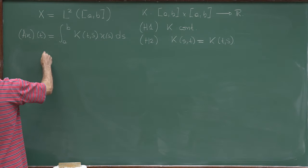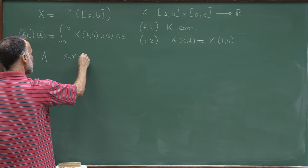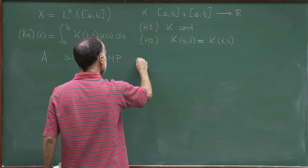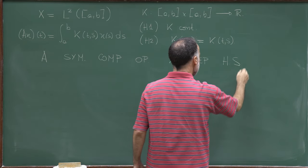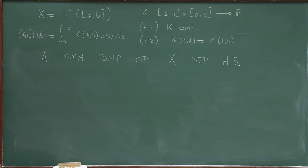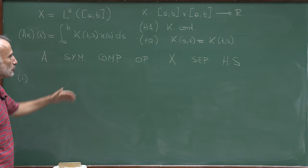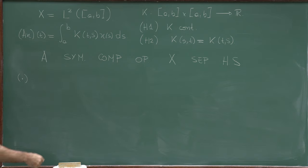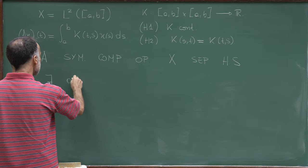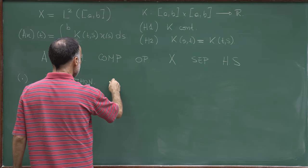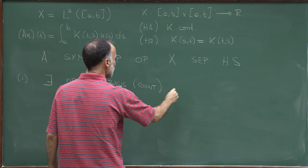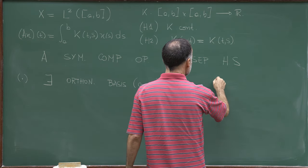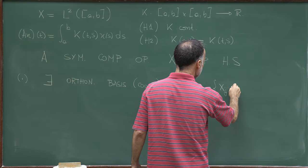We have proved that A is a symmetric compact operator on X, which is a separable Hilbert space. We are exactly in the framework of the previous lectures. Let me remind you what we proved for symmetric compact operators on separable Hilbert spaces: there exists a countable orthonormal basis of eigenfunctions. We represent this basis as {xⱼ}_{j≥1} (eigenfunctions for non-zero eigenvalues) and {wₖ}_{k≥1} (eigenfunctions associated to the eigenvalue zero).